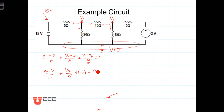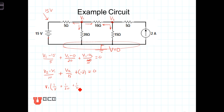Now we have 2 equations in 2 unknowns. Let's solve them by collecting similar terms. In the first equation we have three V1 terms and one V2 term and a constant. Factoring out the V1's, we get V1 over 5 from that term. There's only one V2 term and it's negative V2 over 10, so factoring out V2 leaves negative one-tenth. The constant is negative 15 divided by 5, which we take to the other side as positive 3.